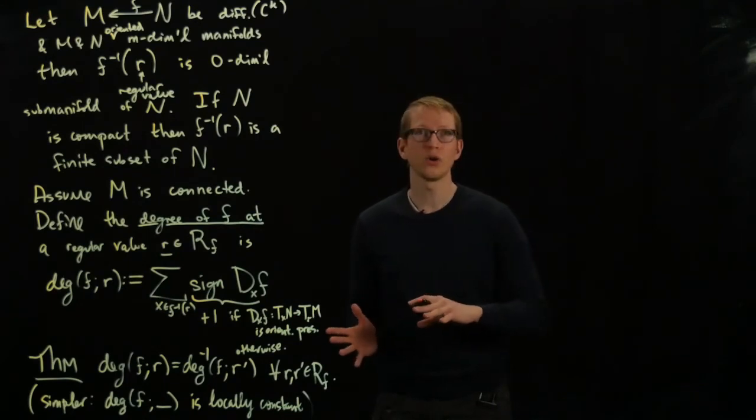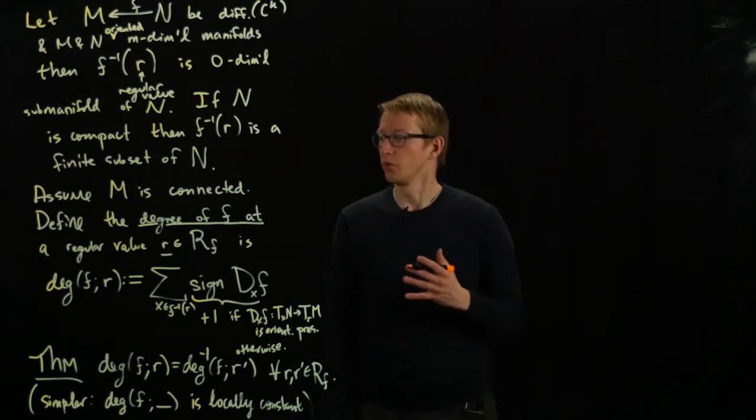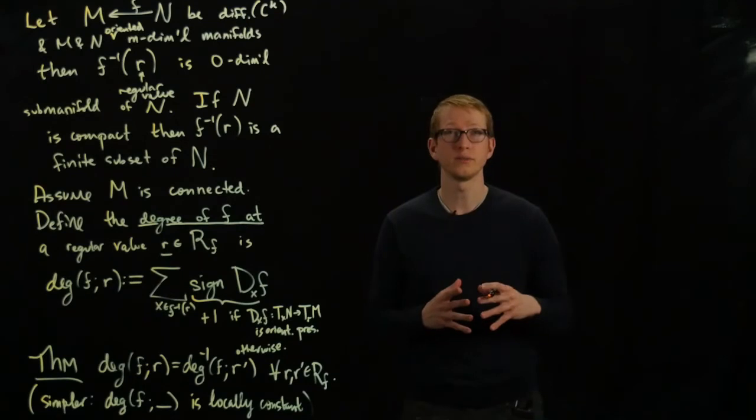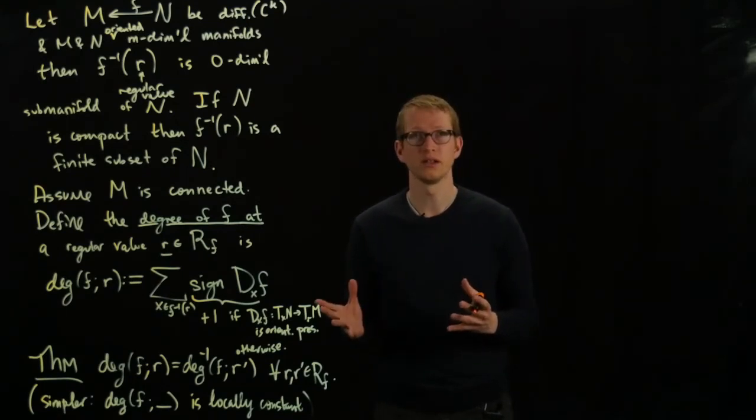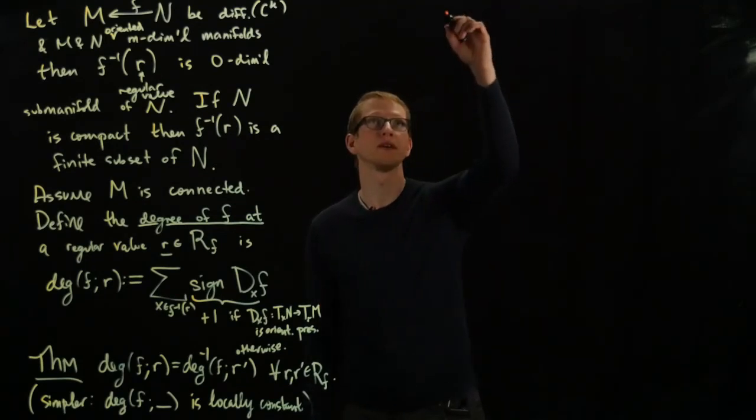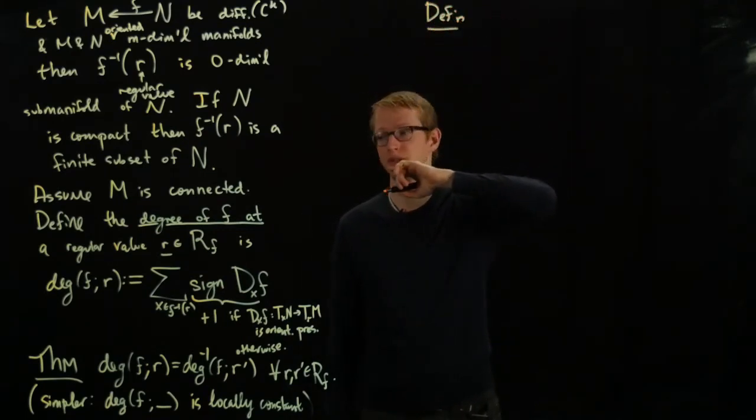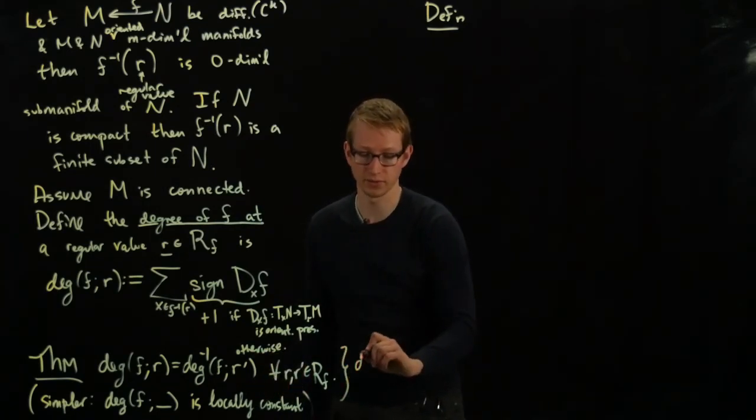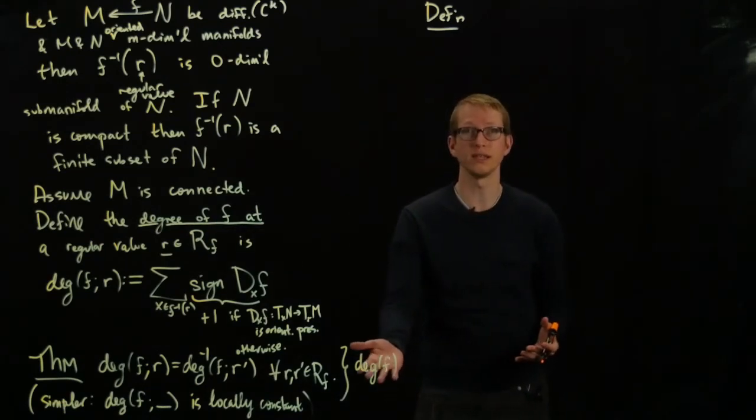So with this definition, we can now go back and think about vector fields again. And we can use this idea to calculate or rather provide an invariant of critical points that depends on the degree of some particular function. So here I'll draw a picture on the side very frequently. So first let's have a definition. And by the way, because of this invariance, we just call the degree of F simply as a degree of F instead of referring to a particular regular value since we know it's independent of that.